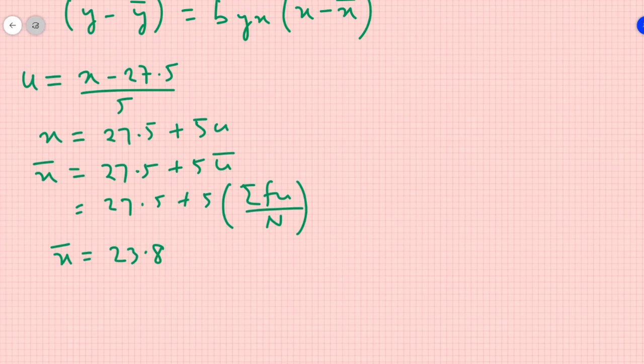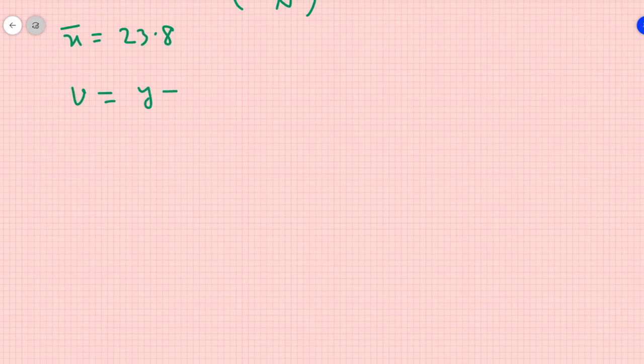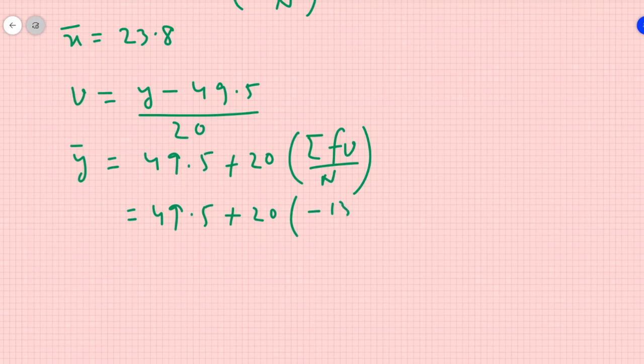Similarly, for y. So we have taken v equals y minus 49.5 by 20. So y bar equals 49.5 plus 20 into summation fv by n. We will put the values 49.5 plus 20 into minus 13 by 50, that will give me 44.3. So x bar is obtained, y bar is obtained.